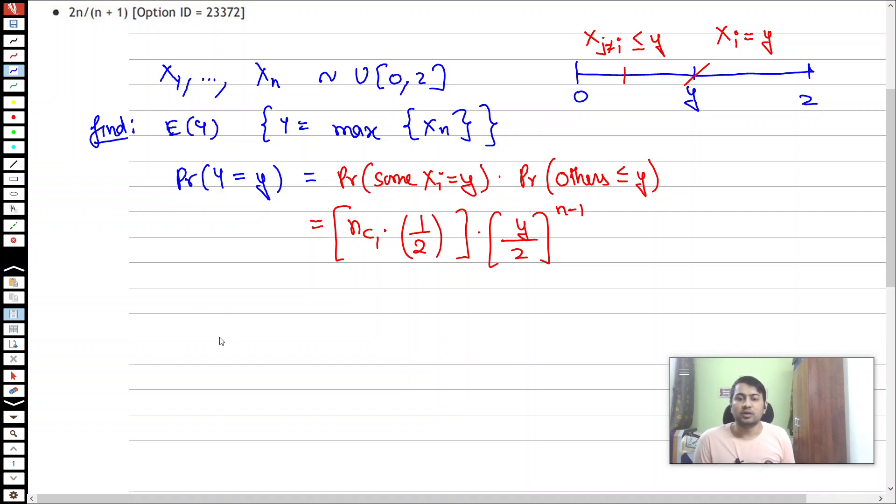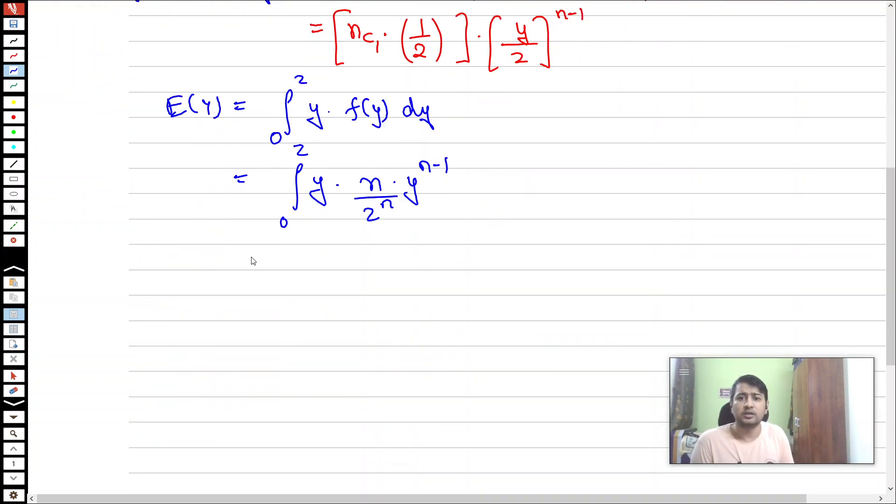So this is my f(y). The expected value of Y is the integral from 0 to 2 of y·f(y)dy. That is the integral from 0 to 2 of y·n·y^(n-1) / 2^n dy.